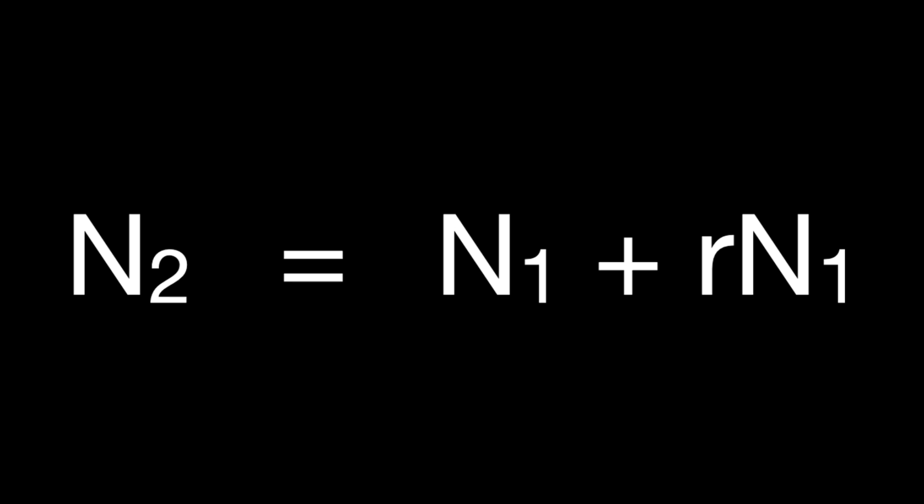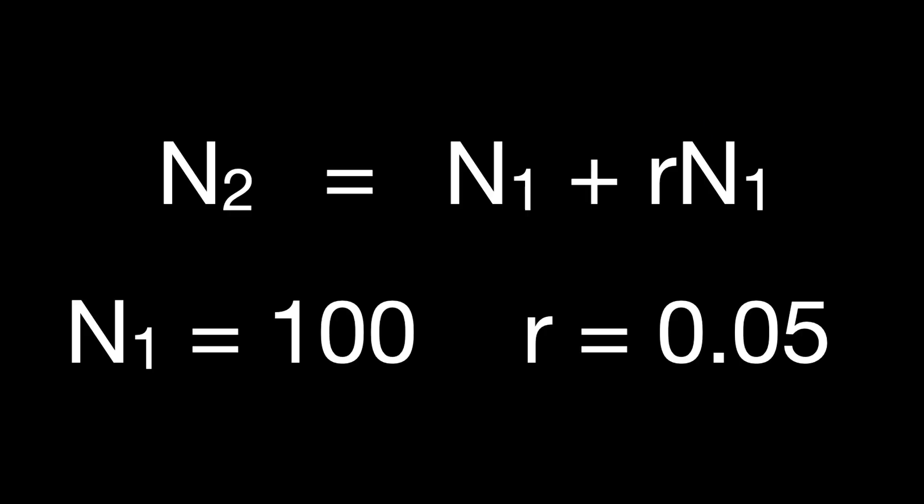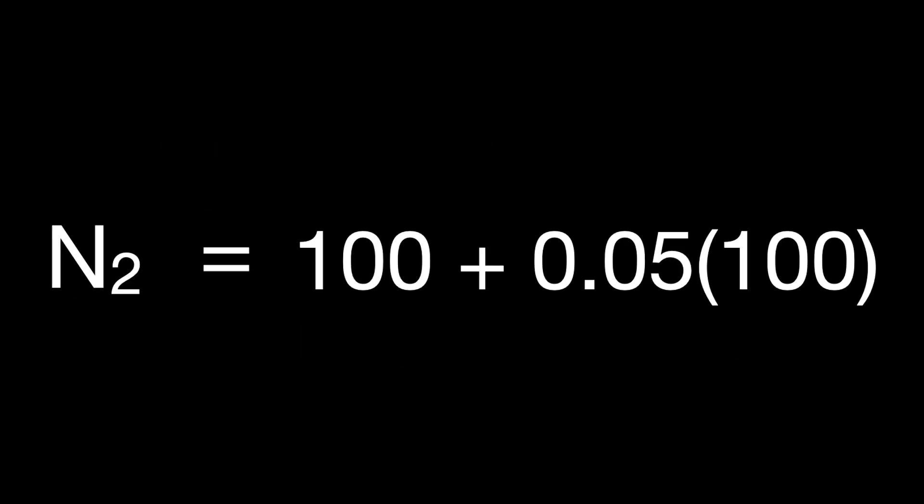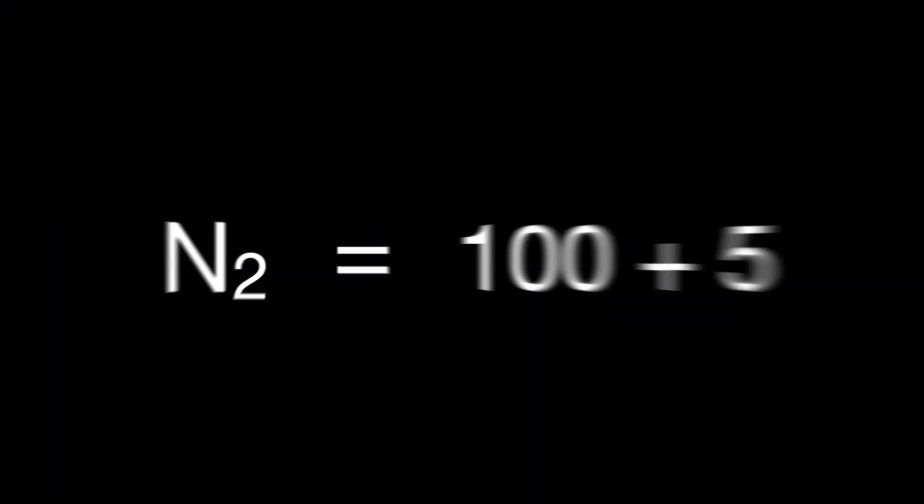Keep in mind that if the mortality rate is higher than the birth rate, then b minus m becomes a negative value, resulting in a negative r. Supposing we want to calculate how a population might change from time 1 to time 2, we can use the equation: N(T2) = N(T1) + rN. For example, a population of 100 bears has a per capita rate of increase of 0.05 — so N at time 2 equals 100 plus 0.05 times 100, resulting in 105 bears in the next generation. Just keep in mind that this change of 5 could have resulted from, say, 12 births and 7 deaths, or any other combination.